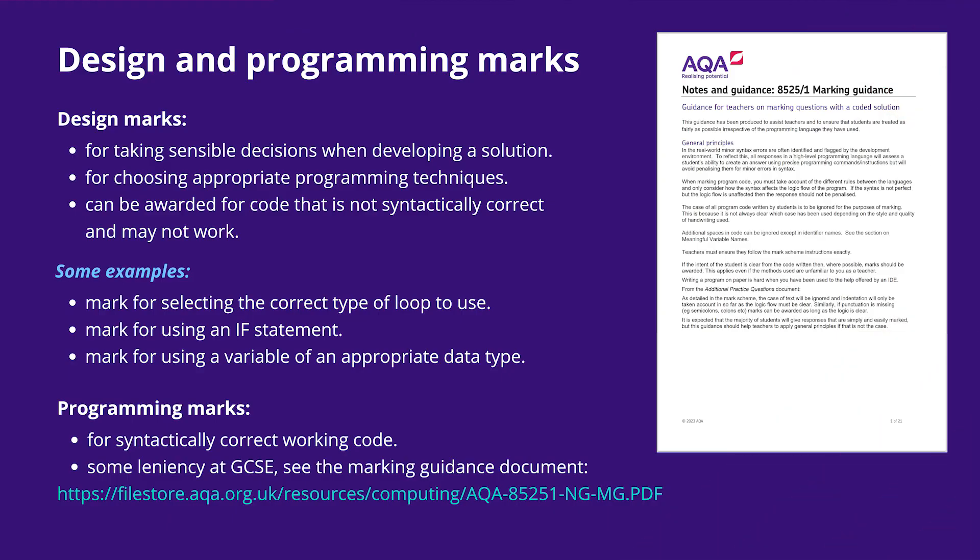At GCSE, AS and A-level, marks may be available for the design of code. These marks relate to the selection of appropriate techniques to solve a problem and are obtainable even if the student has written code that would not work. Design marks like this function at a higher level than programming marks. The programming marks at AS and A-level are only available for syntactically correct working code. At GCSE some leniency is applied, as students are writing code on paper and don't have the benefit of using an integrated desktop environment or IDE to check their syntax and execute their code, which AS and A-level students can do.